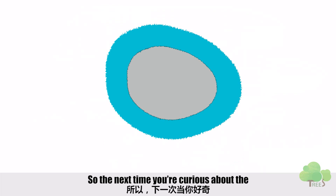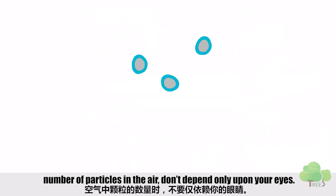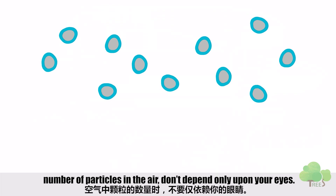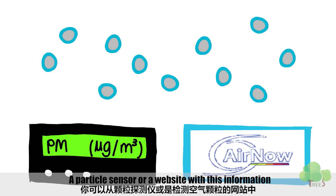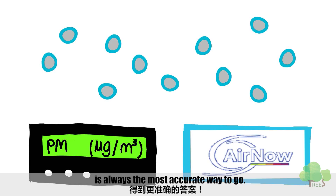So next time you're curious about the number of particles in the air, don't depend only upon your eyes. A particle sensor or a website with this information is always the most accurate way to go.